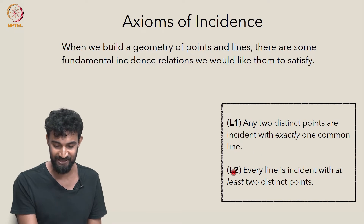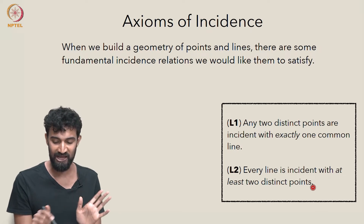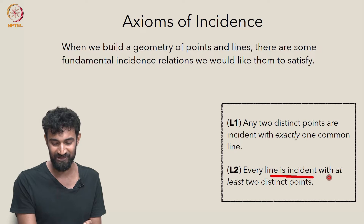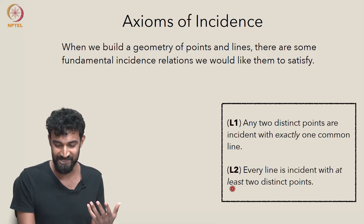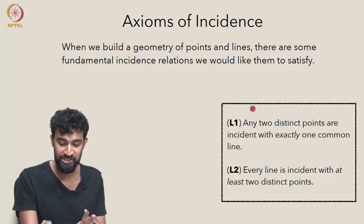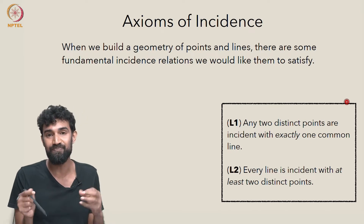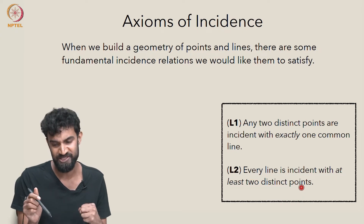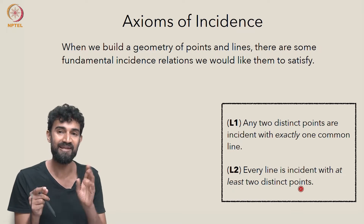The second axiom, L2, is that every line is incident with at least two distinct points. Every line contains at least two points. It seems almost trivial — why would a line contain less than two points? Most lines we're used to dealing with contain infinitely many points. But we want to build a general enough framework to consider even finite sets of points, so this axiom ensures every line is interesting.